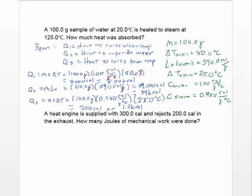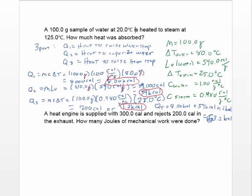Now we add the three values together. Q_total = Q1 + Q2 + Q3 = 8.00 kcal + 54 kcal + 1.2 kcal = 63.2 kilocalories. You have to do this kind of problem in steps — there's no way to do it as one large calculation. That gives our final answer of 63.2 kilocalories.